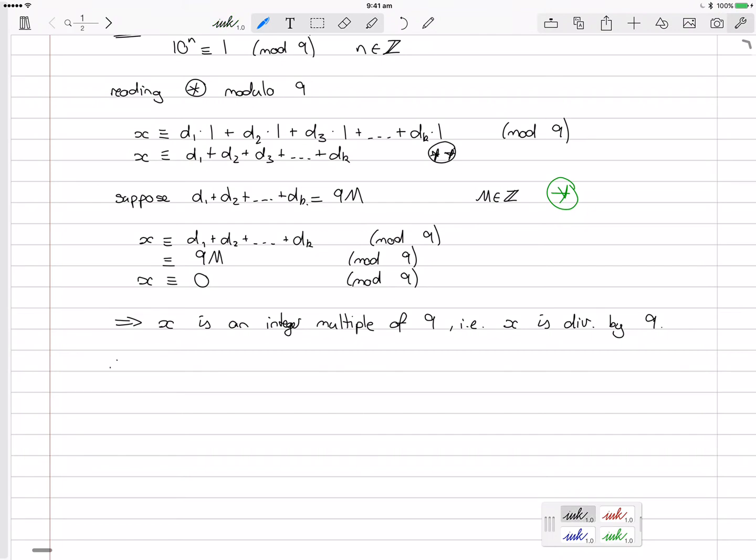So I can say, therefore, x is divisible by 9 if its digits, i.e. d1, d2, d3, all the way up to dk, if its digits add to a multiple of 9. And of course when we say multiple, we mean integer multiple, we mean integer multiple. Multiple of 9. Good, so let's see a few examples.